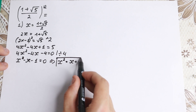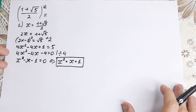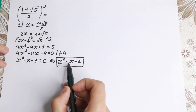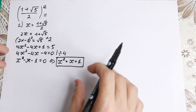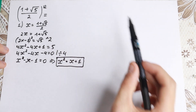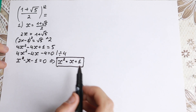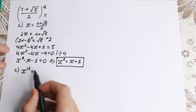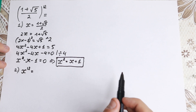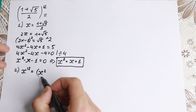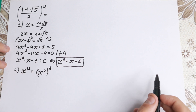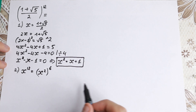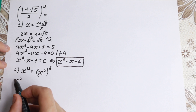So x² equals x plus 1, because we can replace the square sign by a first-power expression — this is like going down and down in powers, which is what we need to reach the 12th power. Step 2: x to the 12th power can be rewritten as (x²)⁶. Let's work with this — (x²)⁶ is exactly x to the 12th power.